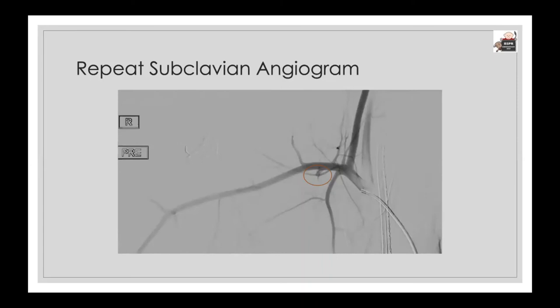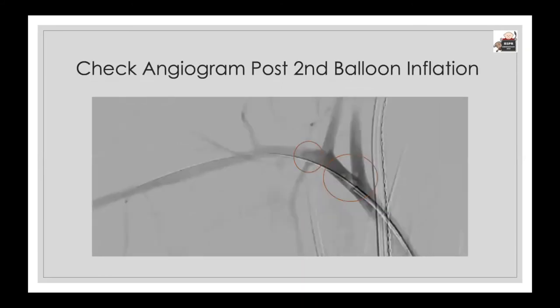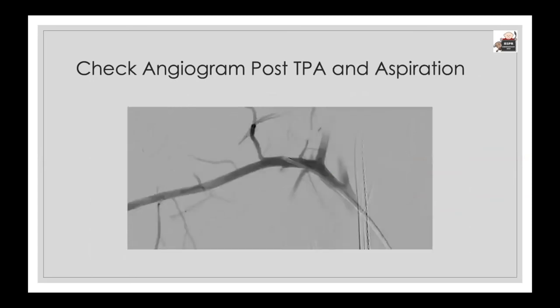A balloon was placed across the site of injury, inflated for 20 minutes, and a check angiogram was performed. Unfortunately this showed filling defects in the subclavian artery and also the carotid artery, consistent with blood clots. If the carotid artery clots embolised up to the brain this could cause a stroke. To prevent this, a long sheath was quickly inserted and with a combination of small aliquots of tPA to help dissolve the clots and with aspiration, the blood clots were removed. A further check angiogram confirmed that all the clots had been removed and the carotid, subclavian, and vertebral arteries all remained patent. A cerebral angiogram also confirmed no thrombus within the cerebral circulation.